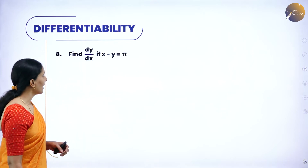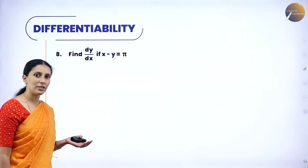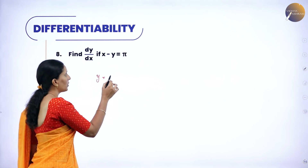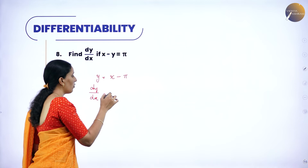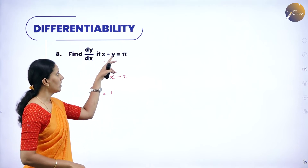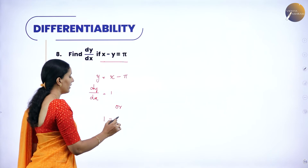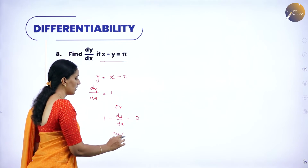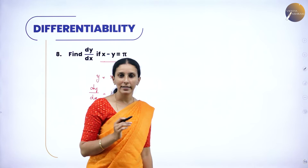Find dy/dx if x − y = 5. Here both x and y are on the same side — you can consider it as an implicit function, or convert it to y = x − 5 and find dy/dx. When you derive: derivative of x is 1, derivative of any constant is 0. So dy/dx = 1. Whether it is an implicit or explicit function, find dy/dx and get the answer.